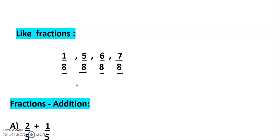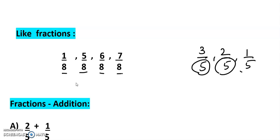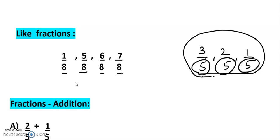For example, you can take 3/5, 2/5, and 1/5. What is the denominator? All the denominators are the same, so these are all like fractions. So 1/8, 5/8, 6/8, and 7/8 are like fractions.